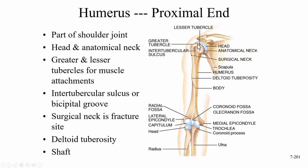The lesser tubercle is more anterior than the greater tubercle. Between the tubercles is a depression or sulcus — remember, if you're depressed you sulk, so a sulcus is a depression. This groove is called the intertubercular sulcus, since it runs between two tubercles, like an interstate between states. It's also called the bicipital groove because one of the bicep tendons runs through it.